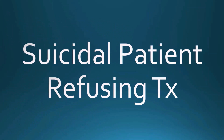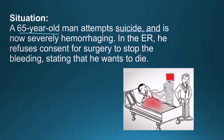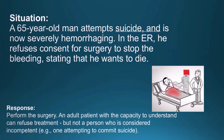Suicidal patient refusing treatment. A 65-year-old man attempts suicide and is now severely hemorrhaging. In the ER, he refuses consent for surgery to stop the bleeding, stating that he wants to die. What should we do? Perform the surgery. An adult patient with the capacity to understand can refuse treatment, but not a patient who is considered incompetent — for example, one attempting to commit suicide.